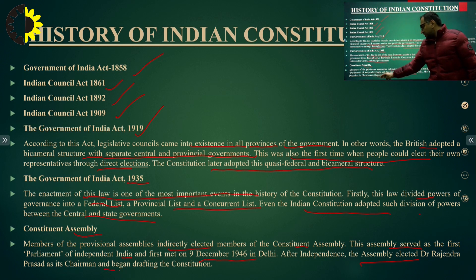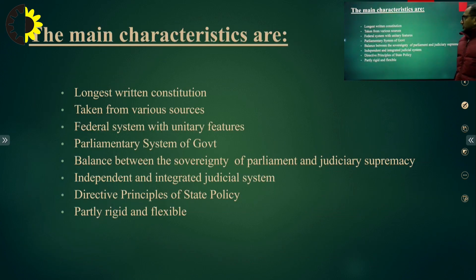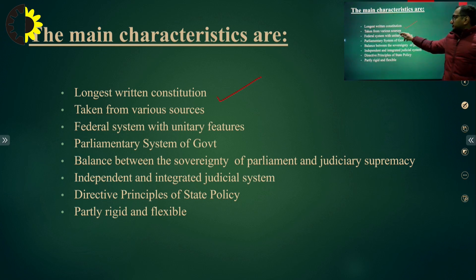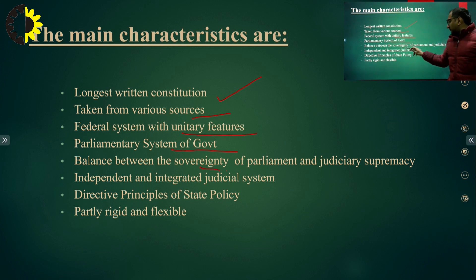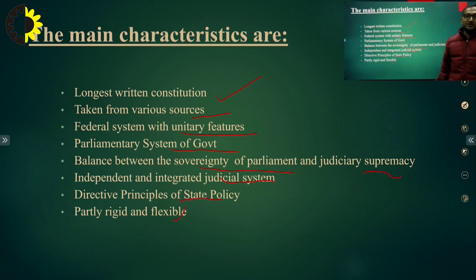After independence, the assembly elected Dr. Rajendra Prasad as its chairman and began drafting the constitution. Dr. Rajendra Prasad was also the first president of India. The main characteristics of the constitution are: it is the longest written constitution, it is drawn from various sources, it has a federal system with unitary features, a parliamentary system of government, a balance between parliamentary sovereignty and judicial supremacy, an independent and integrated judicial system, directive principles of state policy, and it is partly rigid and partly flexible — meaning amendments can be made according to need.